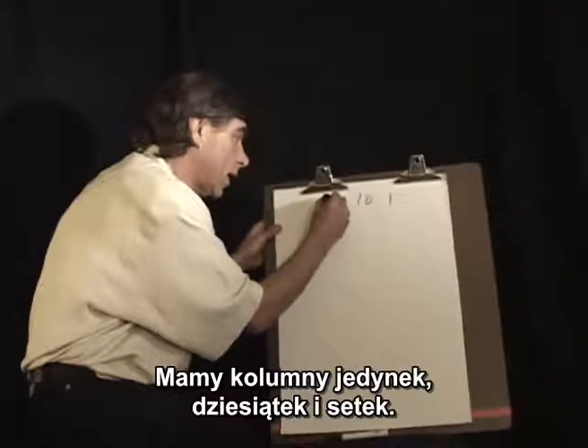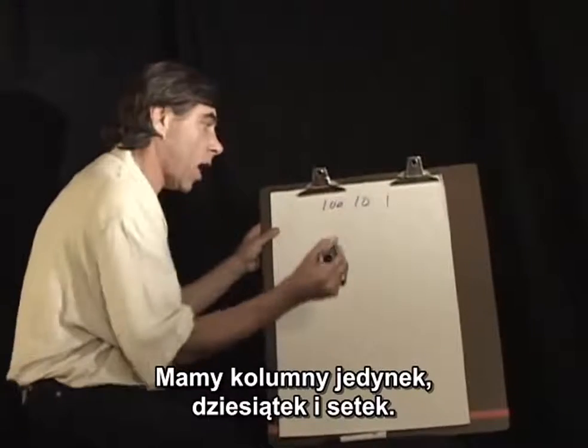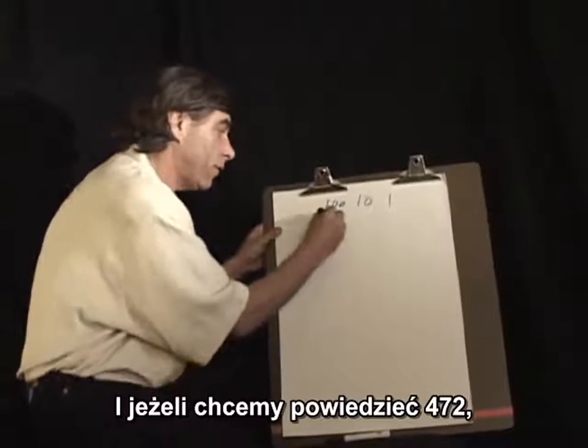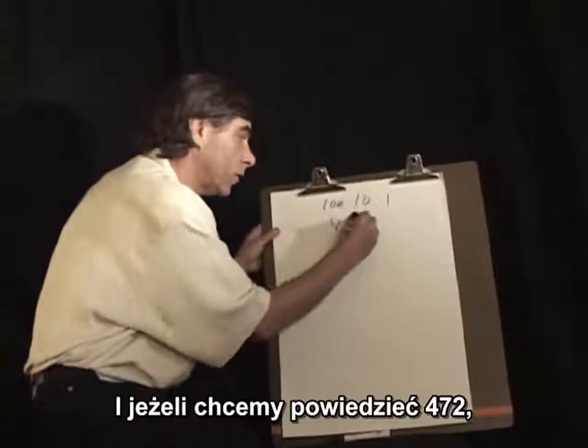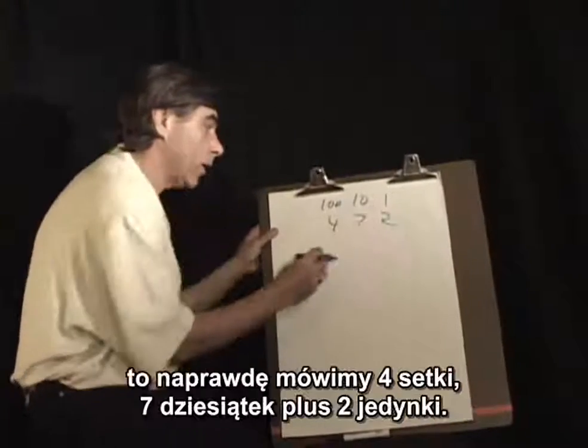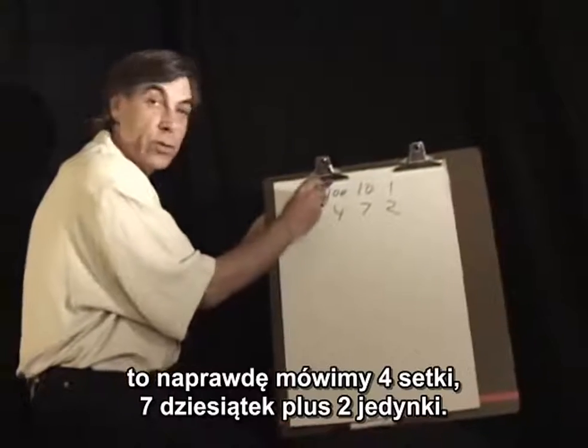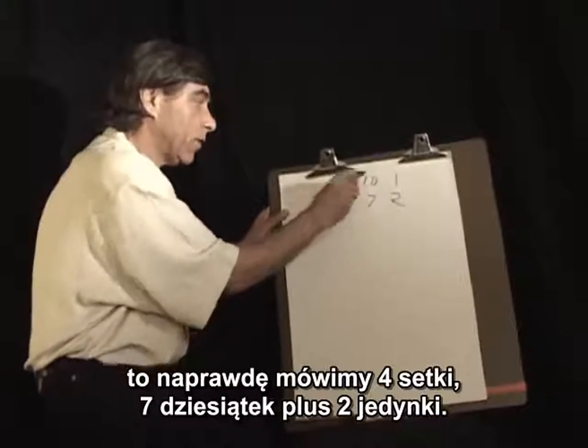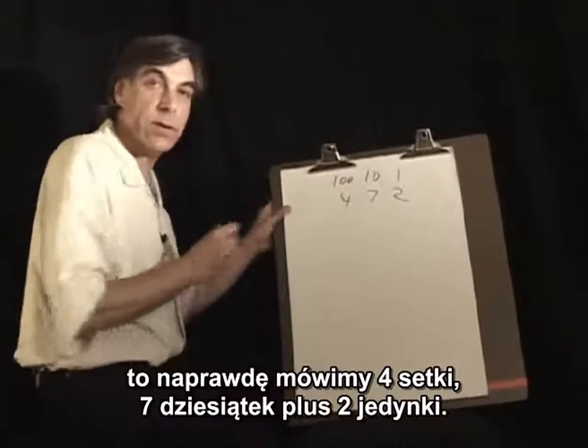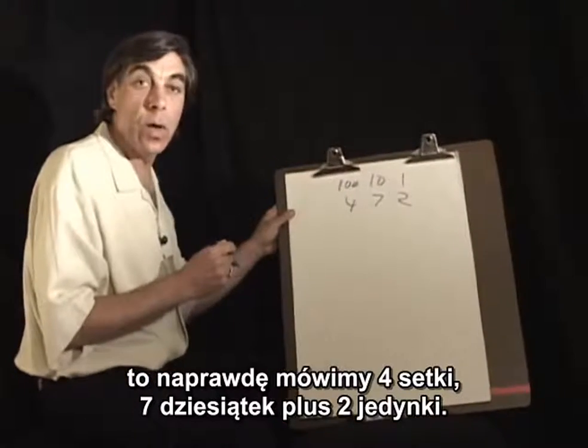We have the ones, the tens, the hundreds columns. So if you wanted to say 472, we're really saying four hundreds, seven tens, plus two ones.